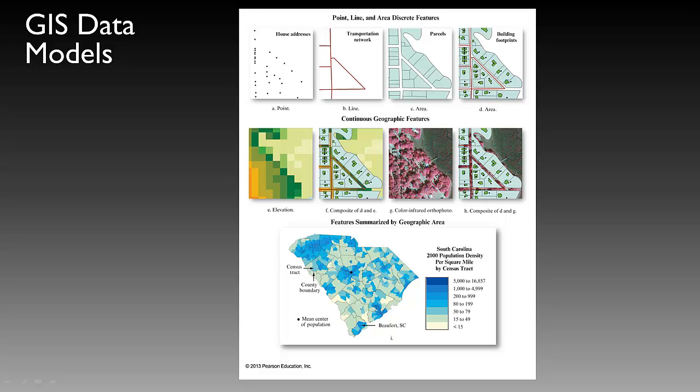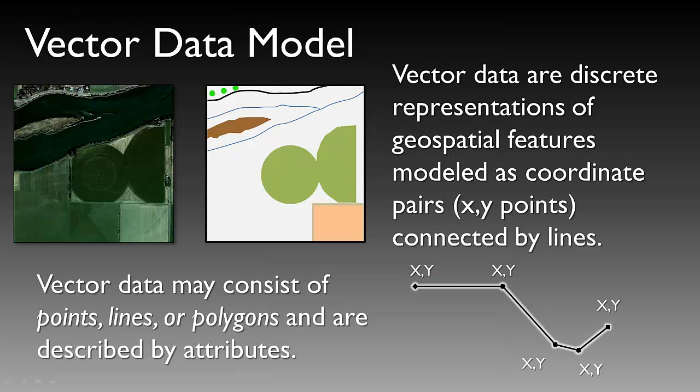Raster data sets can represent elevation, or sometimes just an aerial photo. Perhaps they can represent population density per square mile, as shown as an example in the slide.